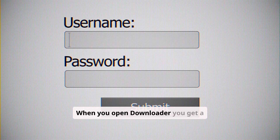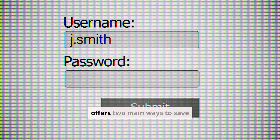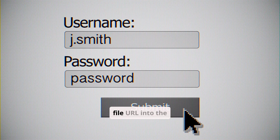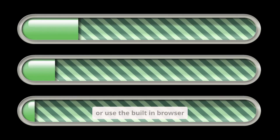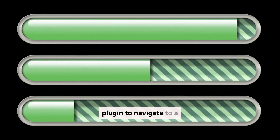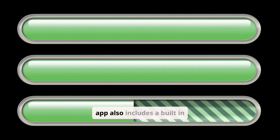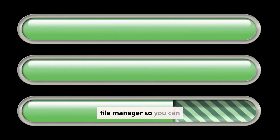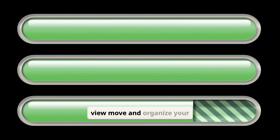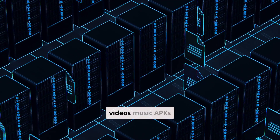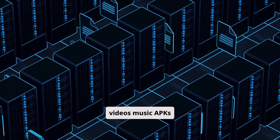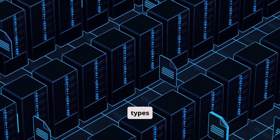When you open Downloader, you get a simple interface that offers two main ways to save files. You can paste a direct file URL into the Downloader field and press Download, or use the built-in browser plugin to navigate to a page and download media from there. The app also includes a built-in file manager, so you can view, move, and organize your downloads into folders. The developer emphasizes support for videos, music, APKs, and other common file types.